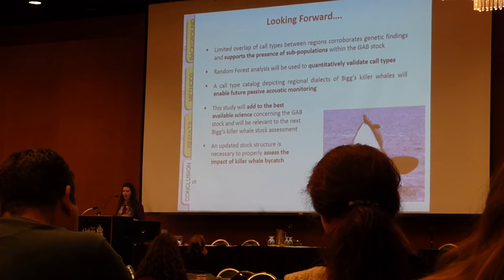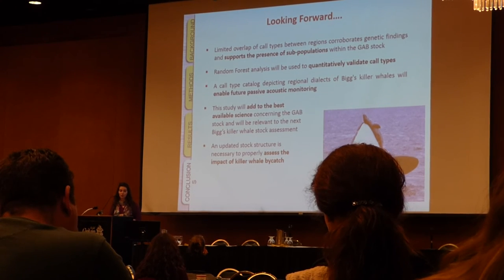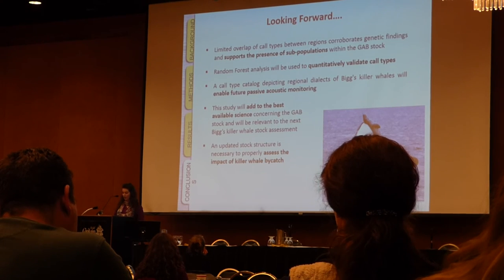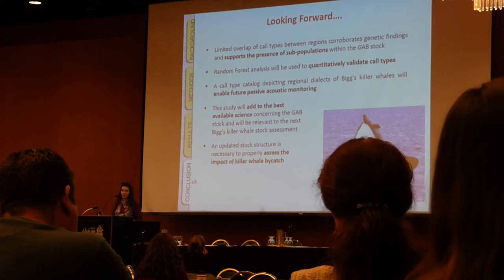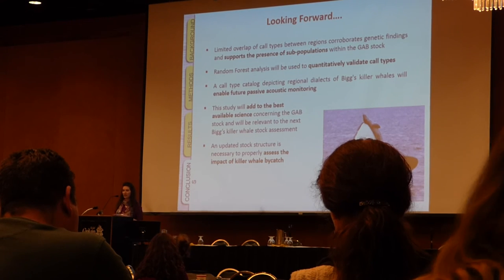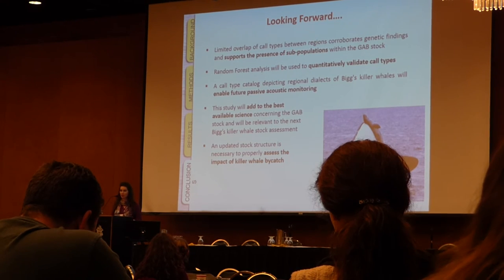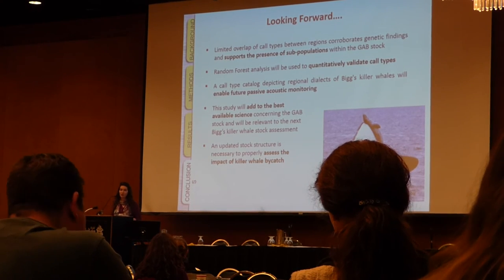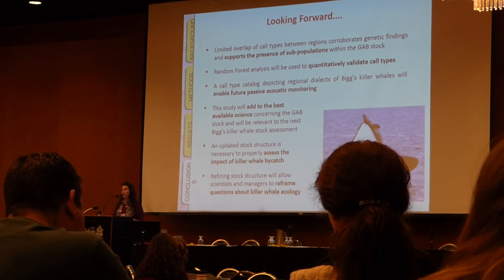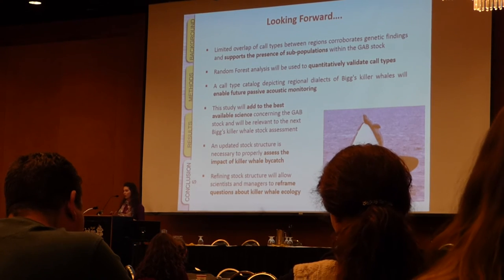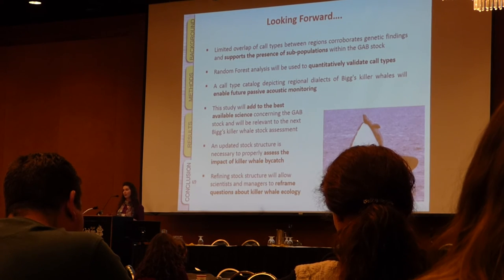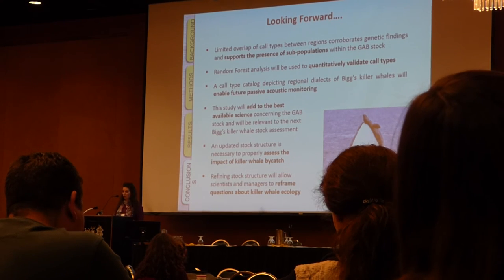Why is refining the stock structure of Biggs killer whales so important? First, killer whales are occasionally taken as bycatch, and this likely doesn't represent a significant threat if you're thinking about Biggs killer whales as one large stock. However, the picture becomes very different if there are a number of subpopulations, some of which might be rather small. Furthermore, there's interest in the impacts that Biggs killer whales may have on other marine mammal species, and it will be an important step forward if we can think about Biggs killer whales as subpopulations which likely range and forage in unique ways.